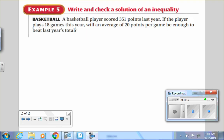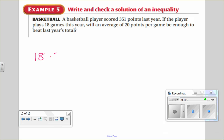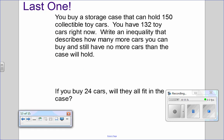All right, another word problem for us to read and think about. A basketball player scored 351 points last year. If the player plays 18 games this year, will an average of 20 points per game be enough to beat last year's total? Right? How do we figure this out? Good. What is 20 times 18? And so will they beat last year's record? Yes. And so just a quick multiplication.